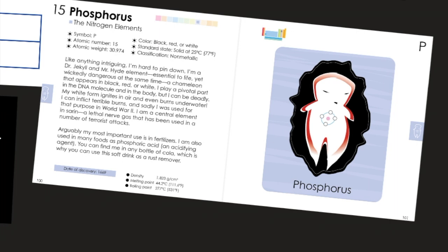My white form ignites in air and even burns underwater. I can inflict terrible burns, and sadly, I was used for that purpose in World War II. I'm a central element in sarin, a lethal nerve gas that has been used in a number of terrorist attacks, unfortunately. Arguably, my most important use is in fertilizers.